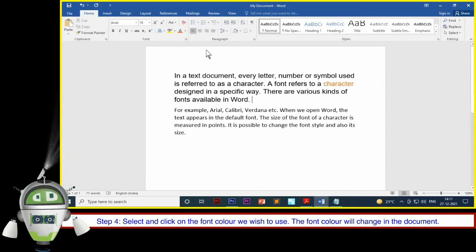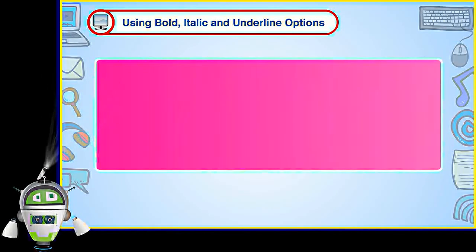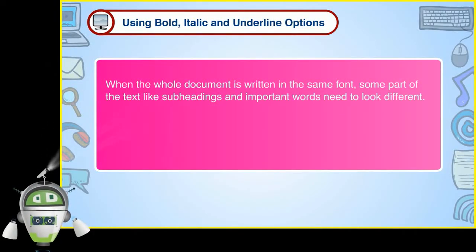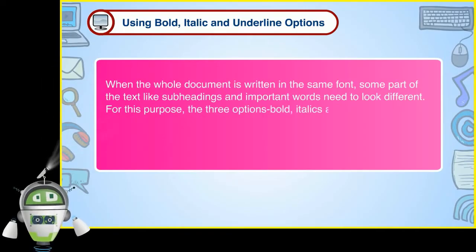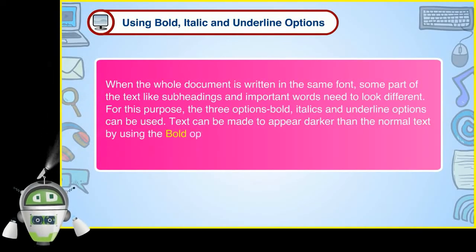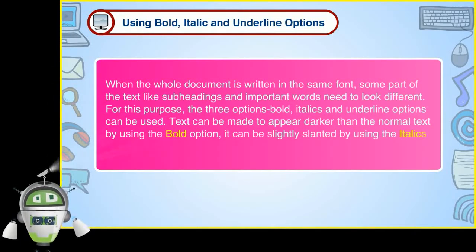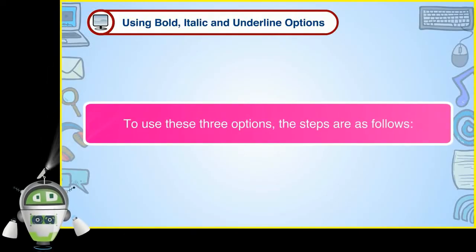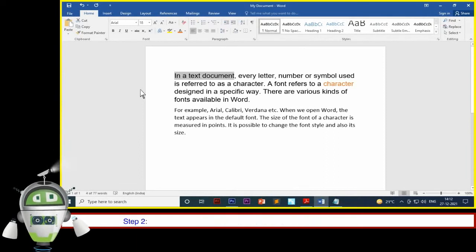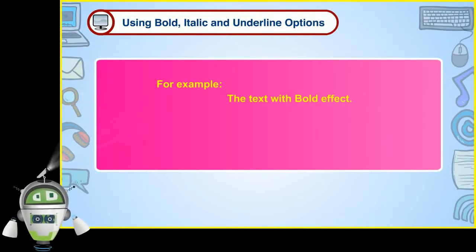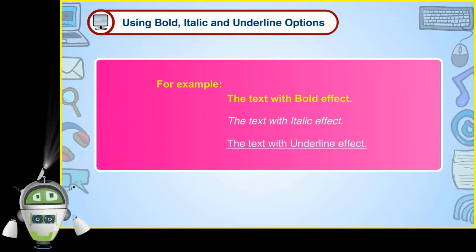The font color will change in the document. Using bold, italic and underline options: when the whole document is written in the same font, some parts of the text like subheadings and important words need to look different. For this purpose, the three options — bold, italics and underline — can be used. Text can be made to appear darker than the normal text by using the bold option. It can be slightly slanted by using the italics option and it can be underlined by using the underline option. To use these three options, Step 1: Select the text we wish to modify. Step 2: Click on the bold, italic or underline options in the font group on the home tab. The selected action will be performed on the text, for example: the text with bold effect, the text with italic effect, the text with underline effect.